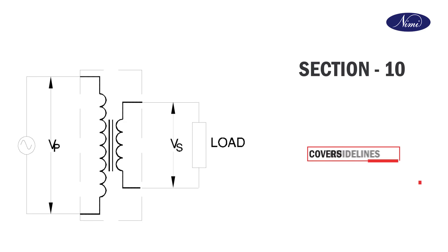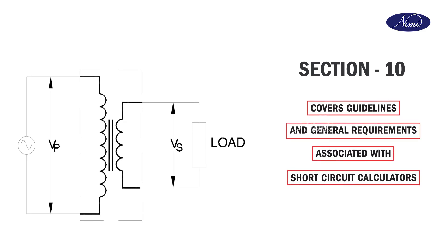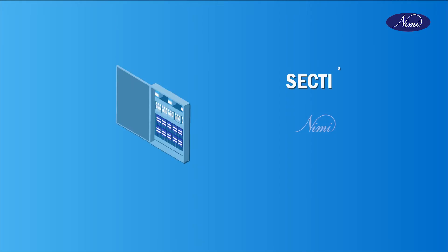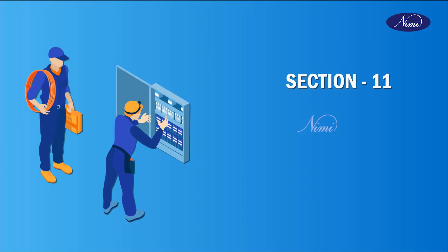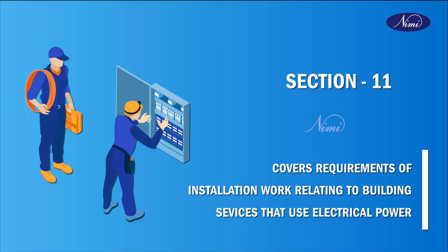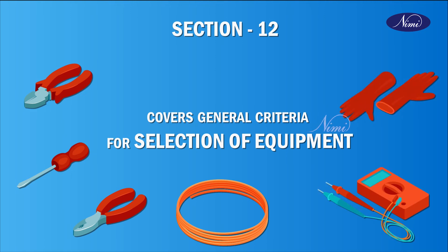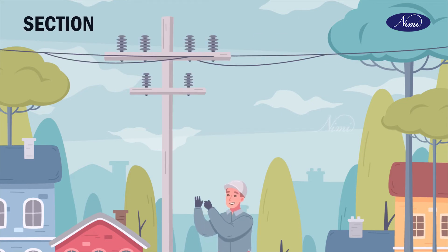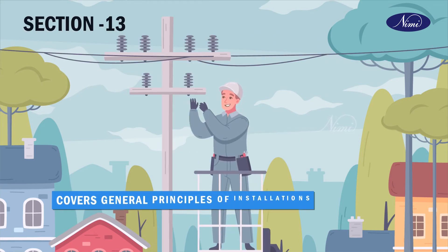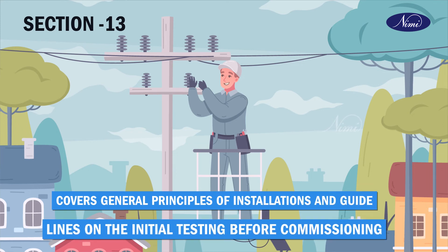Section 10 gives guidelines and general requirements associated with short circuit calculations. Section 11 covers requirements of installation work relating to building services that use electrical power. Section 12 covers general criteria for selection of equipment.